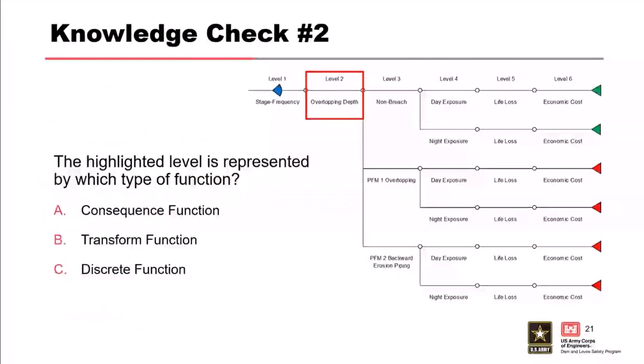Another knowledge check: looking at an event tree graphic with level two highlighted—the highlighted level is represented by which type of function? Consequence, transform, or discrete? The correct answer is B, transform function. There is only one branch associated with this level. We use this level to convert from our original hazard of stage frequency to get a peak stage, then convert that peak stage into an overtopping depth to evaluate PFM1 overtopping, since overtopping is a function of overtopping depth.